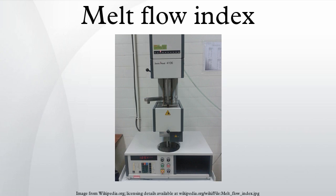Melt flow rate is very commonly used for polyolefins, polyethylene being measured at 190°C and polypropylene at 230°C. The plastics engineer should choose a material with a melt index high enough that the molten polymer can be easily formed into the article intended, but low enough that the mechanical strength of the final article will be sufficient for its use.